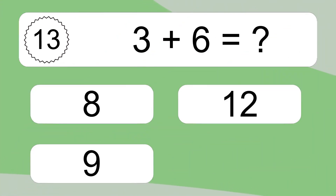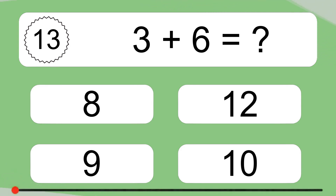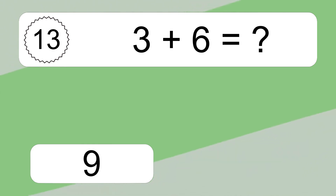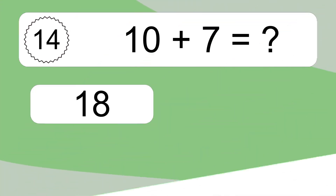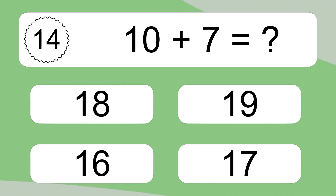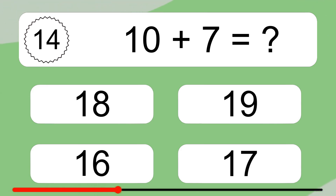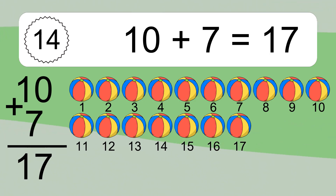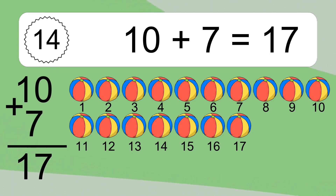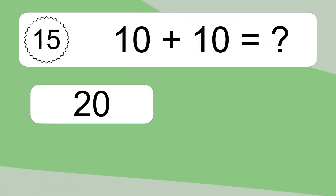3 plus 6 equals what? 10 plus 7 equals 17. Let's count it: 1, 2, 3, 4, 5, 6, 7, 8, 9, 10, 11, 12, 13, 14, 15, 16, 17.